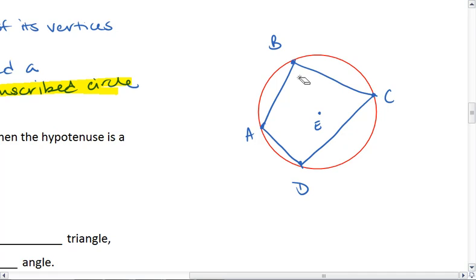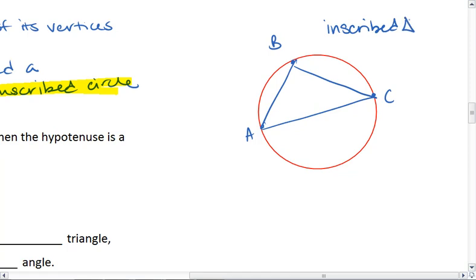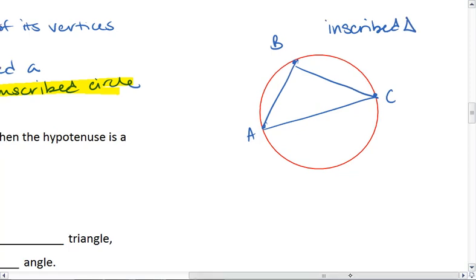I could also do this with triangles. ABC is now considered an inscribed triangle, and my red circle here is a circumscribed circle.